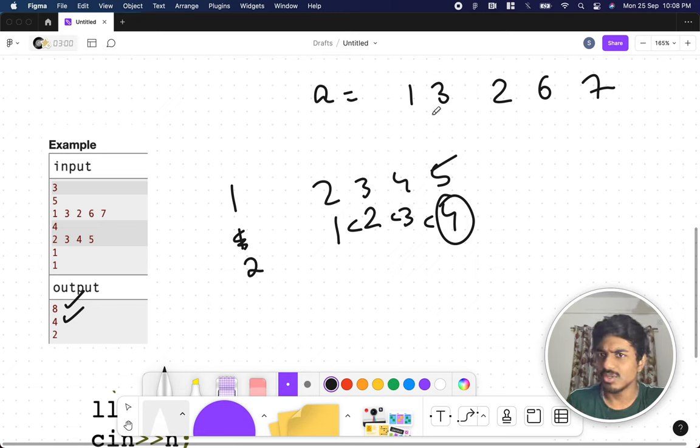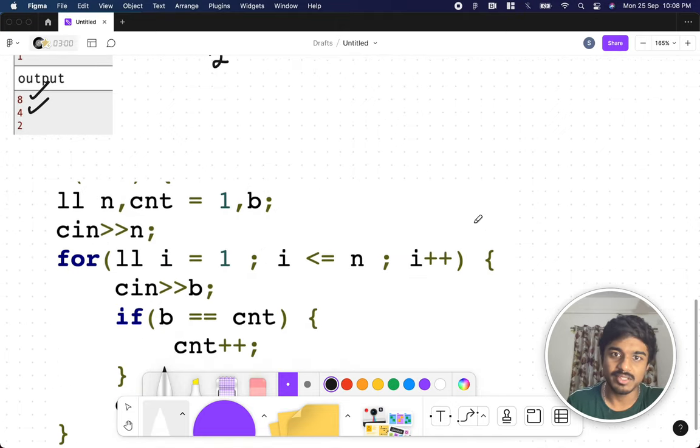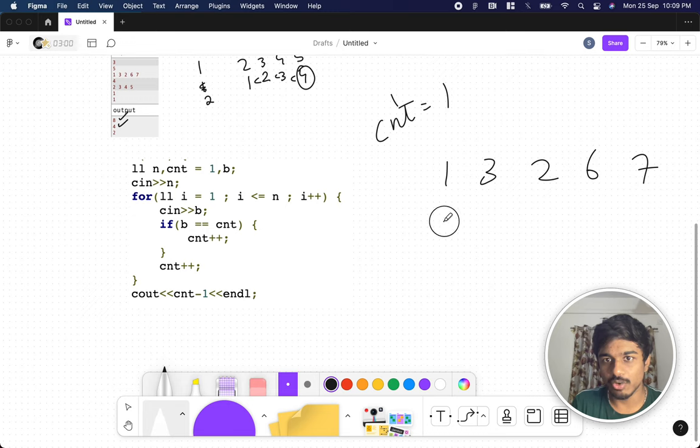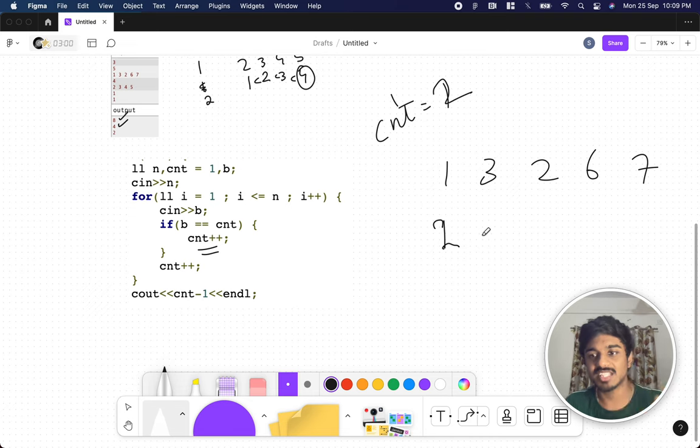Now how do we code it? Let's take the example 1, 3, 2, 6, 7. First thing I do is assume the b starting value will be the count, so count will be 1. I understand that b and count are the same, so I increment the count. Incrementing the count means count becomes 2. I increment the count after each iteration because for the next element, I need to at least increment by 1. So count becomes 3.